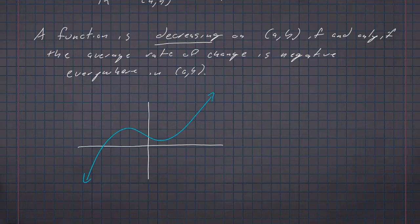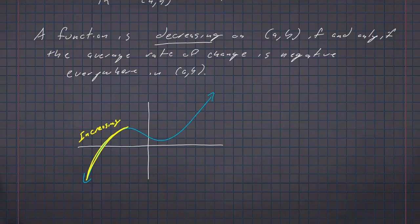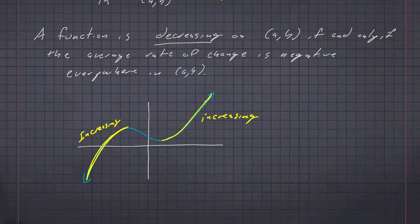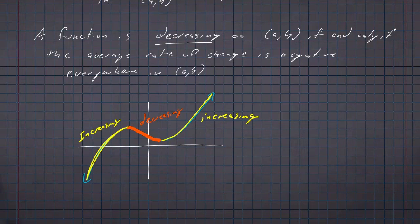So what I'm looking for is a region where we are always positive or always negative. In this particular curve, if I look at this part of the curve, the function is increasing. And if I look at this other part of the curve, the function is also increasing — everywhere in that range the function is heading upward if you read from left to right. In the middle, we've got a space where the function is decreasing; it's heading downward as you go from left to right.